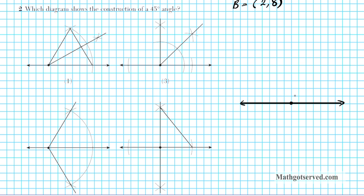A straight line is 180 degrees. What you want to do is start with 180 degrees and bisect it. To do that construction, you make an arc, then place your compass at each endpoint and make intersecting arcs. That gives you a perpendicular line bisecting the 180-degree angle. When you bisect 180 degrees, you get two congruent angles measuring 90 degrees each.